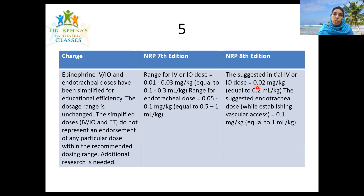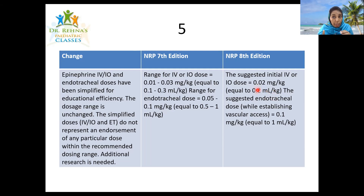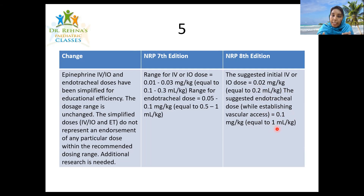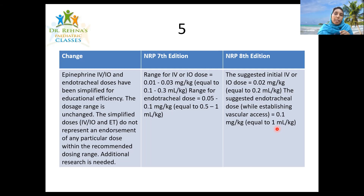Adrenaline is available as 1-in-1,000; we take 1 ml and add 9 ml of normal saline to make 1-in-10,000. For a 3 kg baby: 3 × 0.2 = 0.6 ml IV or intraosseous. The endotracheal dose has also been simplified to 0.1 mg/kg or 1 ml/kg, so for a 3 kg baby that's 3 ml. Please note the range remains the same — using 0.01 or 0.03 is not wrong. This simplification is for educational efficiency only.